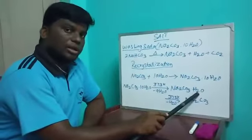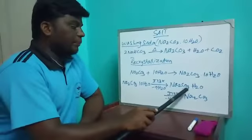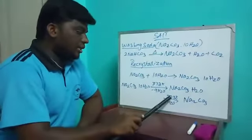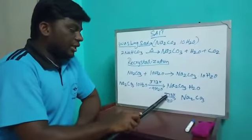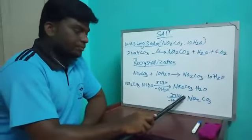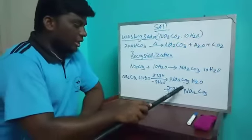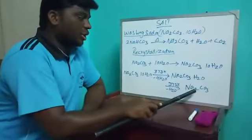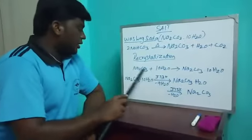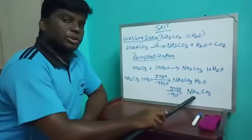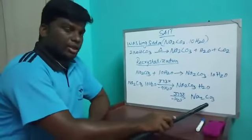Then only one water molecule remains - sodium carbonate plus one water molecule. Further heating at 373 Kelvin evaporates that one water molecule. Now we form sodium carbonate. Sodium carbonate with 10 molecules of water is reduced to sodium carbonate. Thank you.